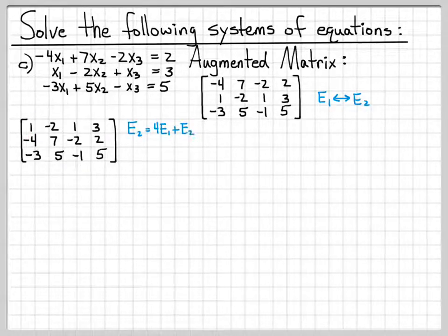The next thing I'm going to do is I'm going to get a 0 right here. And I'm going to get a 0 right here. So I can get a 0 in the second row by letting equation 2 equal 4 times equation 1 plus equation 2. And I can get the other 0 I need by letting the third equation equal 3 times the first equation plus the third equation.